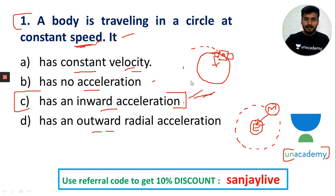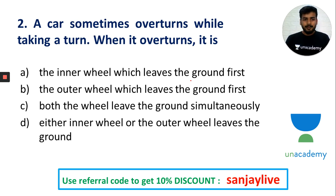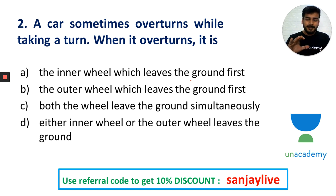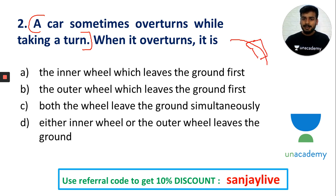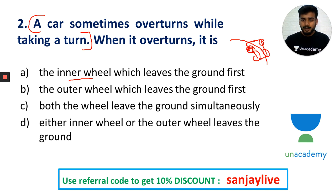A car sometimes overturns while taking a turn. The ABS — anti-lock braking system — is relevant here. When a car takes a turn, the question is: which wheel leaves the ground first? Is it the inner wheel, or the outer wheel, or do both wheels leave the ground simultaneously? This is the question about what happens when a car overturns during a turn.